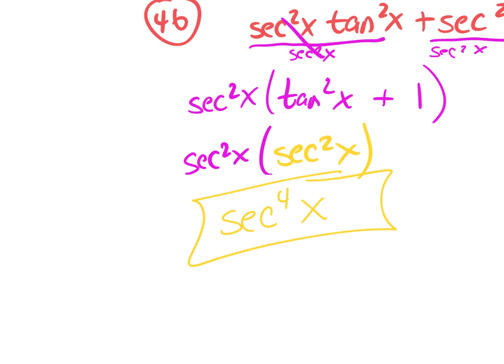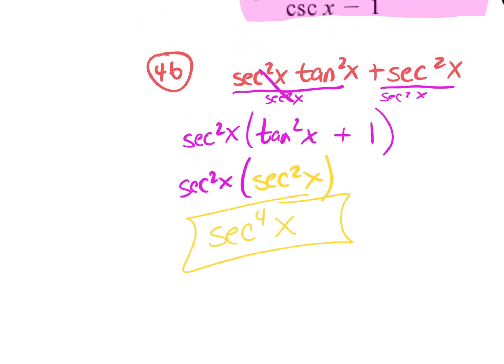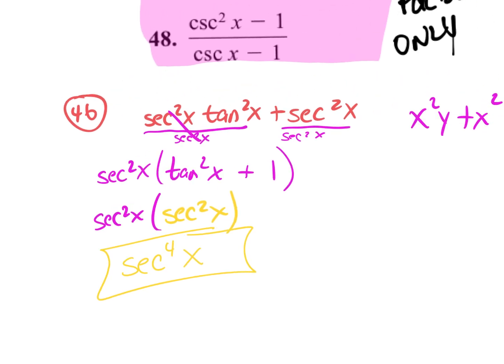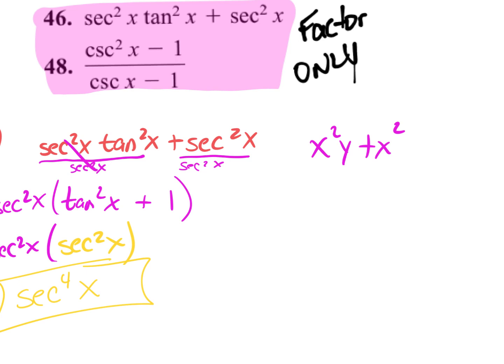Someone might ask: can I write secant to the fourth as 1 over cosine to the fourth? You could, but is that the most simplified form if you go from one term to a fraction? No. Always think algebraically. The words look different but the process — solving and factoring — is the same.